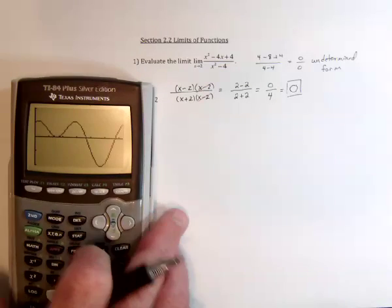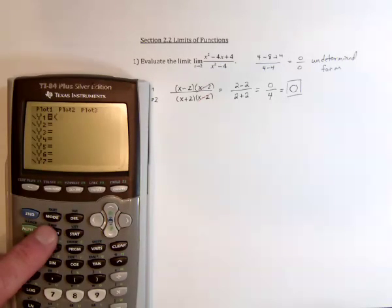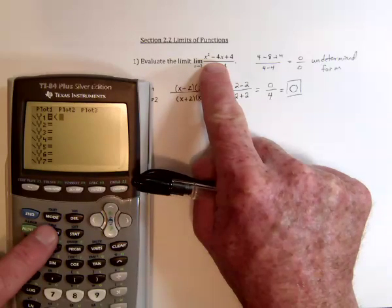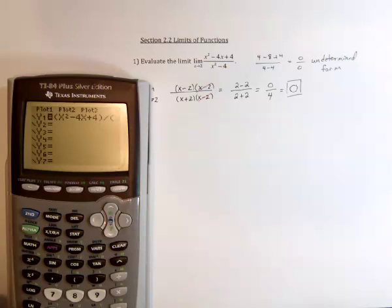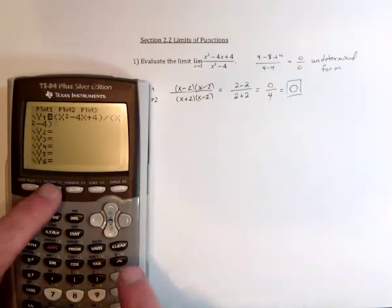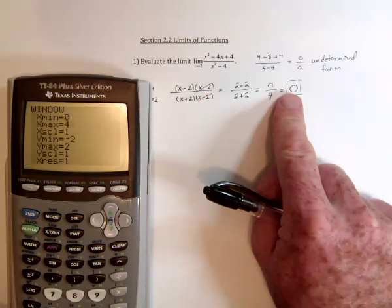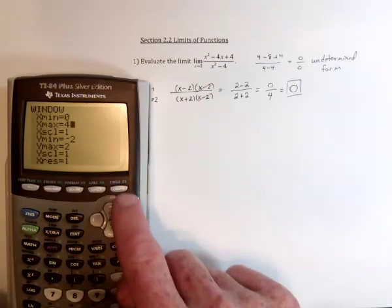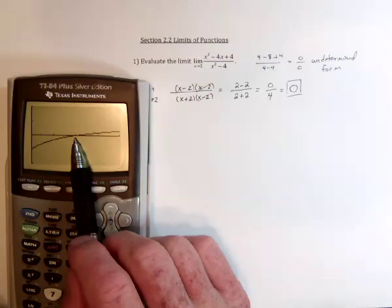Now we can take a look at the function and see if 0 looks right. We're going to graph this function. Since it's got more than one thing in the numerator, use parentheses — here's what's in the numerator: x squared minus 4x plus 4. The same deal with the denominator, put in parentheses: x squared minus 4. We're looking at where x equals 2, so I can change the window to be close to that, like 0 to 4. The answer seems to be 0, so we stay close to 0: negative 2 to 2. And as x gets close to 2, sure enough, the function is very close to 0.